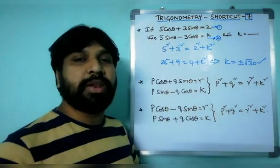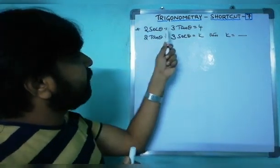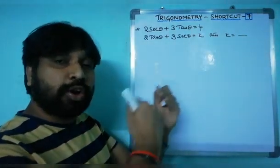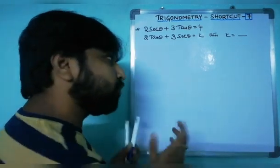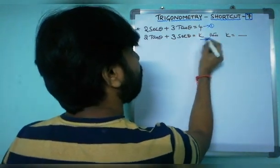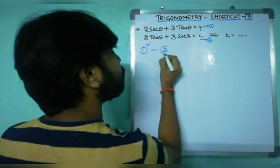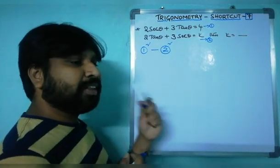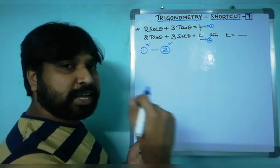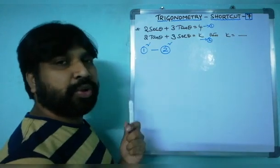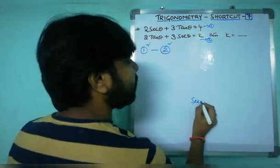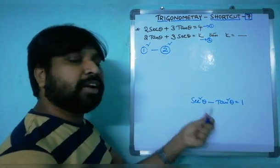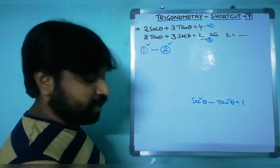Coming to the next related shortcut — a second type: if 2 sec θ + 3 tan θ = 4 and 2 tan θ + 3 sec θ = k, what is k? This is now in terms of secant and tangent instead of sine and cosine. Let these be equations 1 and 2. Here we apply 1² − 2² (minus, not plus) because the relevant identity is sec²θ − tan²θ = 1, so a negative sign is needed.